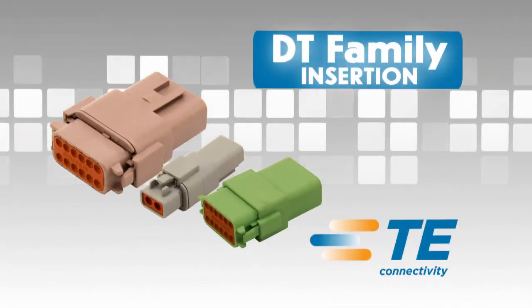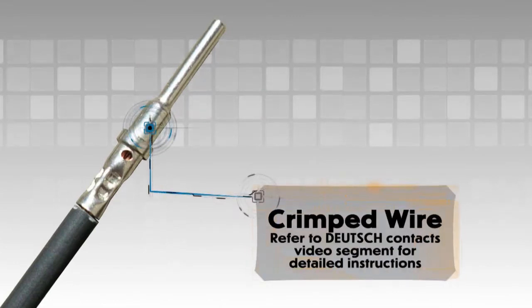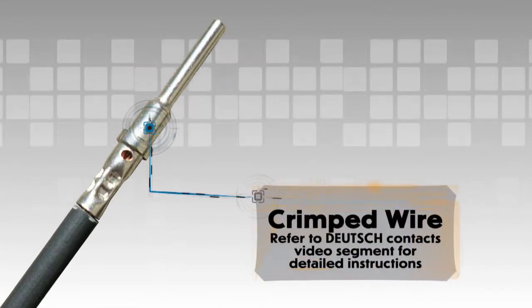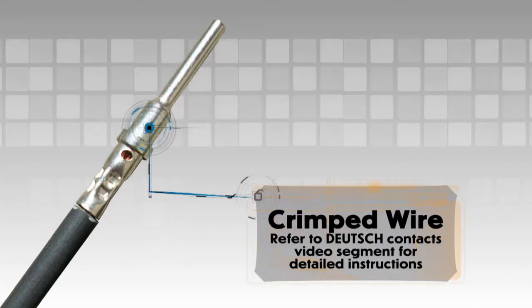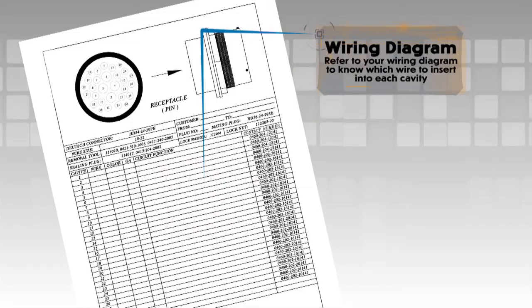DT contact insertion. Begin with a crimped wire. For assistance, refer to the Deutz Contacts video segment for detailed instructions. Refer to your wiring diagram to know which wire to insert into each cavity.